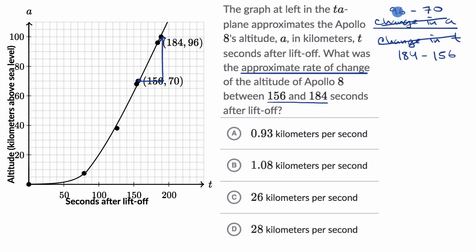So our change in altitude is 96 minus 70. And so what do we get? Our numerator, 96 minus 70, that is 26 kilometers over how much time? Over 184 minus 156. Let's see, 86 minus 56 would be 30, so this is going to be 28 seconds.